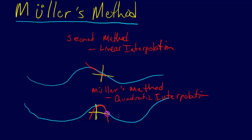Again, we're only going to be using one root, and it depends on what b is. Let's say we're using this root, and that helps us to find the root. So that's Mueller's method.